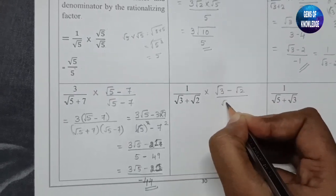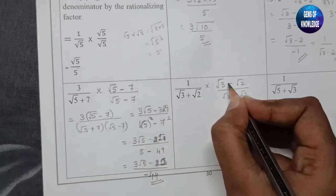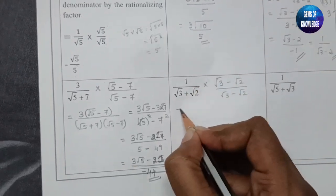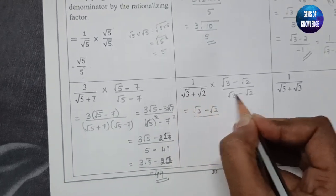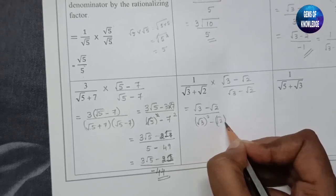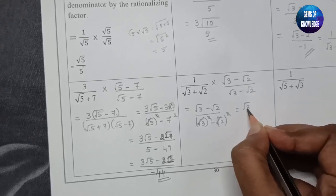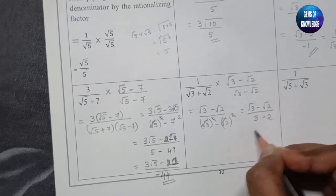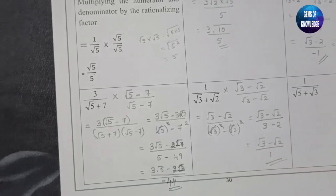For 1/(√3 + √2), we change the sign and multiply by (√3 − √2)/(√3 − √2). The numerator is √3 − √2. The denominator uses a²−b²: √3 squared is 3, √2 squared is 2, giving 3 − 2 = 1. So the answer is (√3 − √2)/1, which is just √3 − √2.